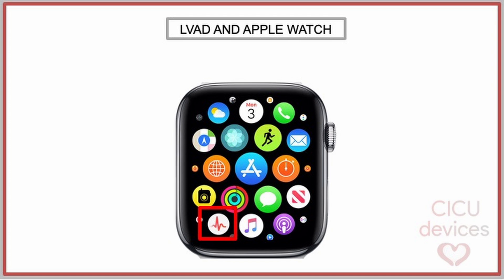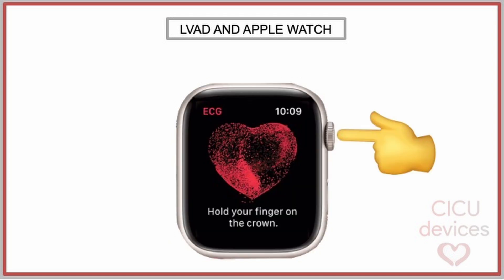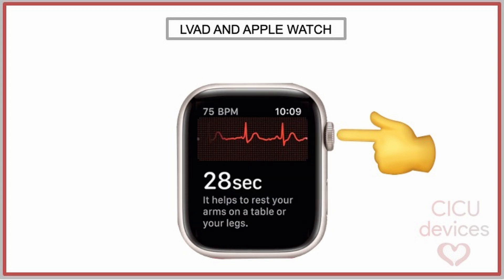Using the ECG app on the Apple Watch to perform an ECG is simple. First, the ECG app should be opened. Next, with the arms on a table or your lap, the index finger of the hand that is not wearing the watch should press the crown. After 30 seconds, the ECG recording will be completed.